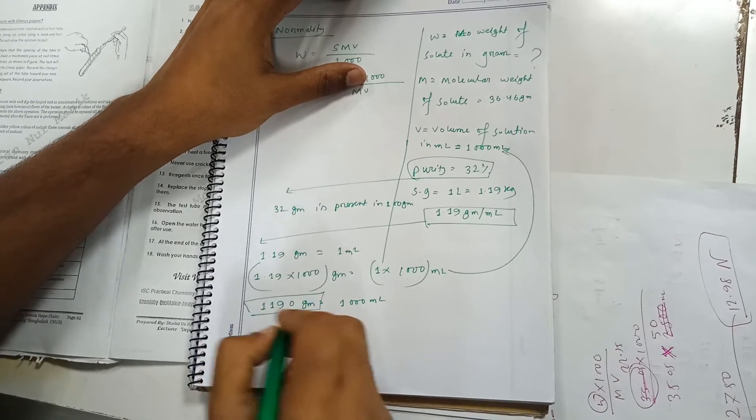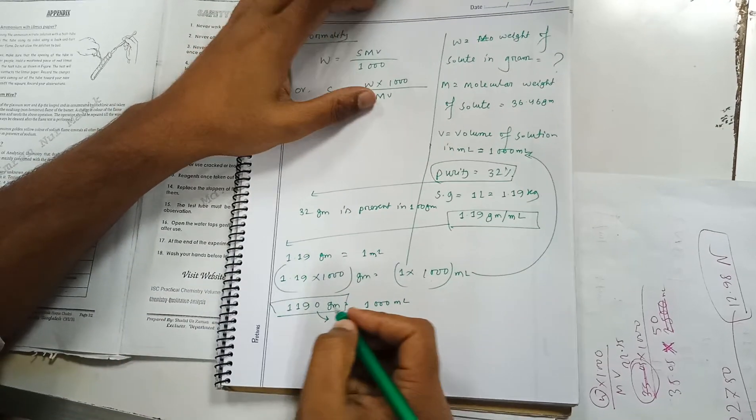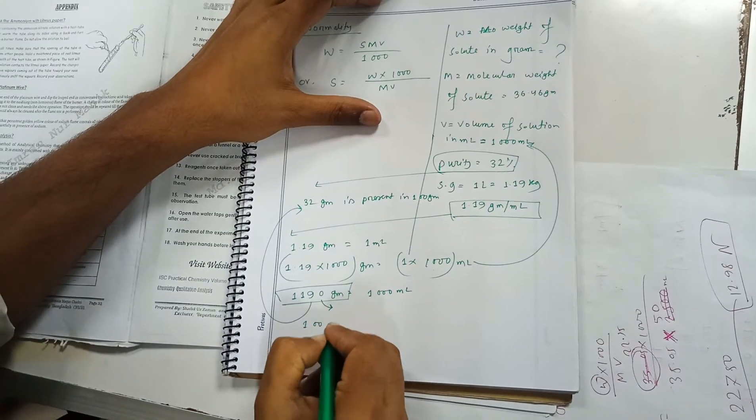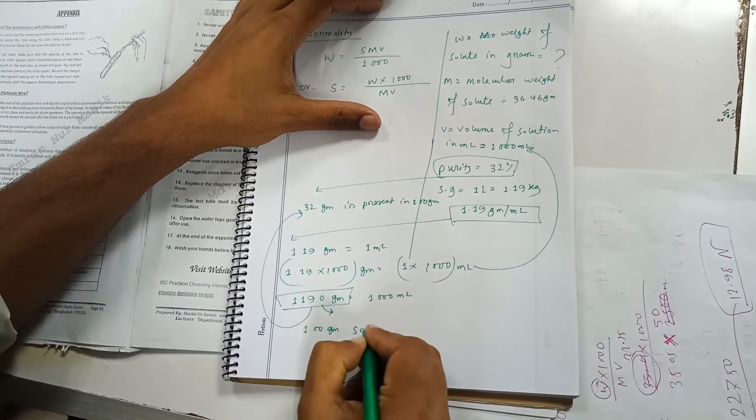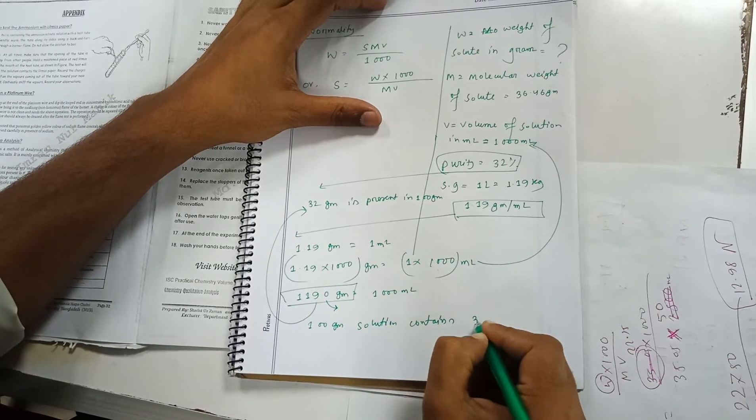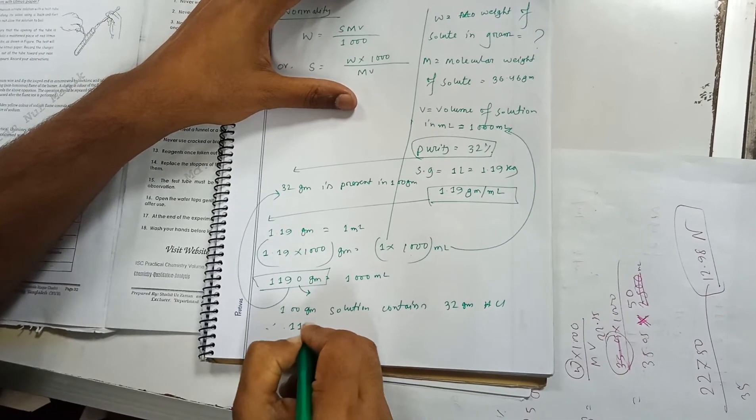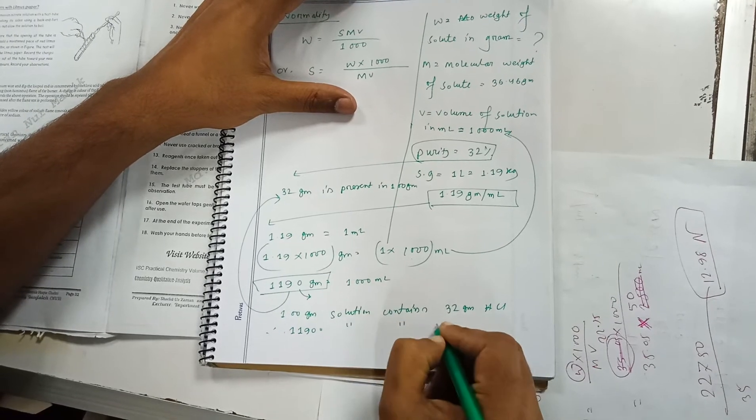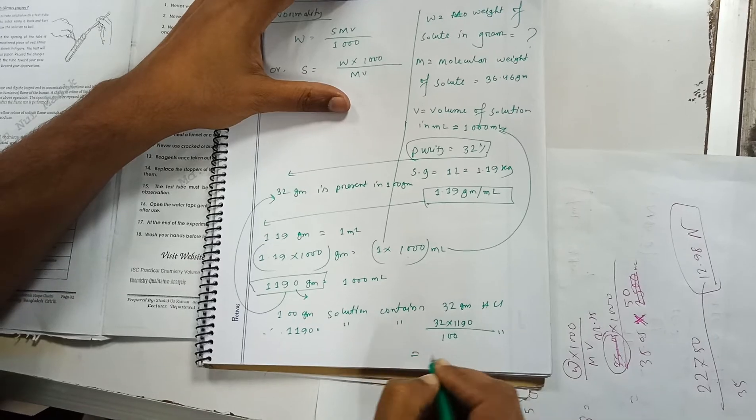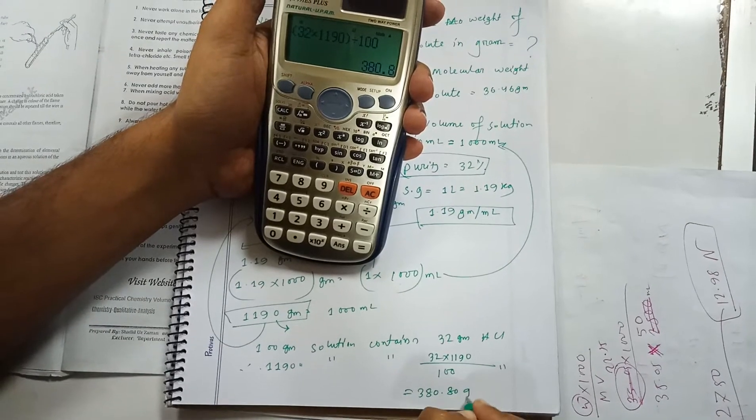In this 1190 grams, the specific amount of hydrochloric acid can be calculated. From this, 100 gram solution contains 32 gram acid. So 1190 gram solution will contain 32 times 1190 divided by 100 gram acid, which equals 380.80 grams.